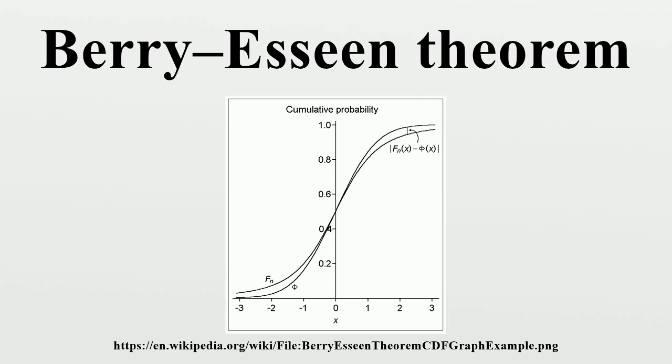then the cumulative distribution functions of the standardized sample mean and the standard normal distribution differ by no more than the specified amount. Note that the approximation error for all n is bounded by the order of n^(-1/2).